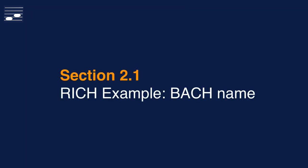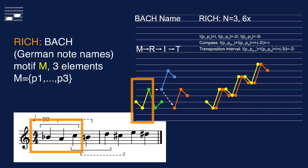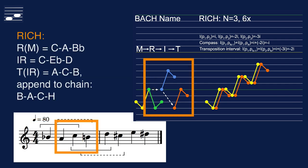And here we are, with the most famous retrograde inversion chain example of all times, the name Bach, when using German note names. We take the first three pitches B-flat A C as the original motif M and apply the procedure. The retrograde is C A B-flat, which after inversion around C yields C E-flat D. We transpose this down by a minor third and obtain A C B, with the two overlapping notes A and C. The four-note chain now is the name Bach.